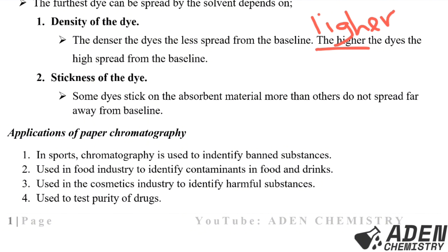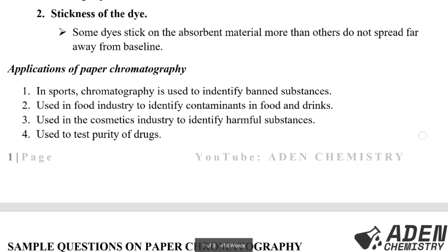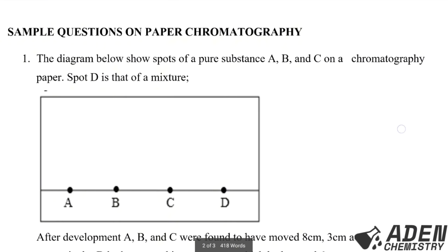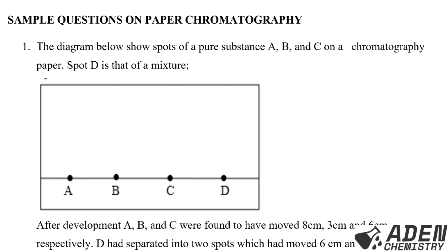Next, the applications of paper chromatography: number one, it is used to identify plant substances. Number two, used in the food industry to identify contaminants in food and drinks. Number three, used in the cosmetic industry to identify harmful substances. Number four, used to test the usage of drugs.